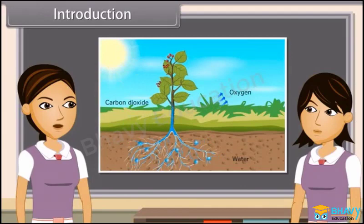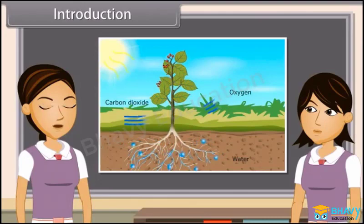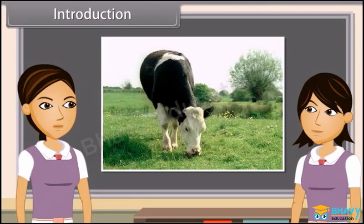Plants use the energy of the sun and prepare food by photosynthesis, which is utilized by them to maintain their life. In turn, these plants are also eaten up by herbivores and omnivores as food, and the carnivores eat herbivores as their food. In this way, we see that it is energy from the sun which provides food for plants and animals.